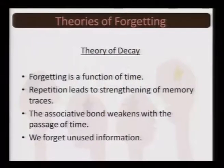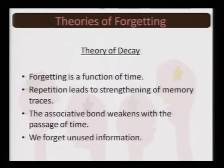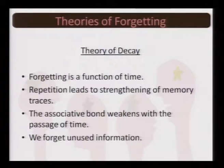There are several theories describing the process of forgetting. One of the oldest is the theory of decay, which says forgetting is a function of time. Repetition leads to a strengthening of memory traces — the more you rehearse, the stronger your memory trace, and the faster the recall. Weakening of memory traces leads to complete loss of information. The associative bond weakens with the passage of time, and this theory says we forget all unused information.